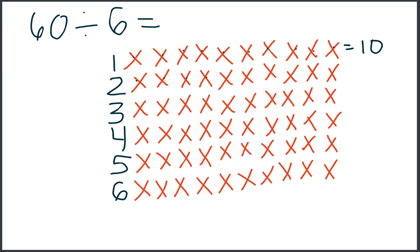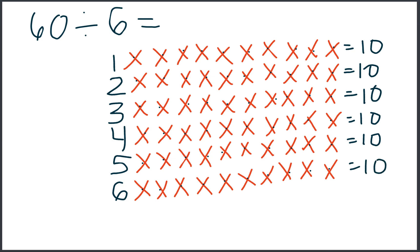Counting each row: 1 through 10, 1 through 10, 1 through 10, 1 through 10, 1 through 10, 1 through 10. So we did it correctly because each row has the same amount. So 60 divided into 6 rows gives us a quotient of 10 in each row.